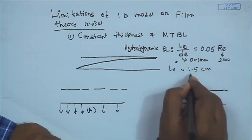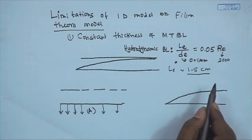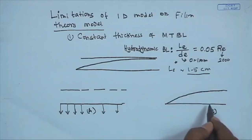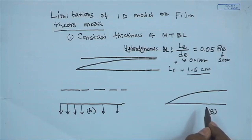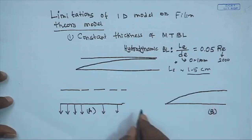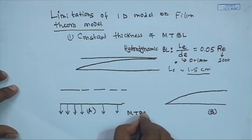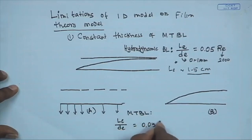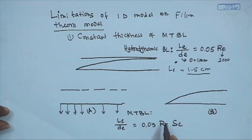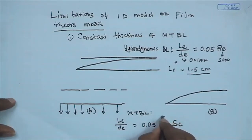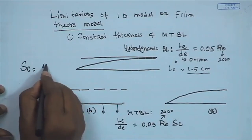Now let us look at the entrance length for the mass transfer boundary layer. For mass transfer, the entrance length is: L_e / d_e = 0.05 × Re × Sc. With Re = 2000 and d_e on the order of 1 mm, we need to estimate the Schmidt number. Schmidt number Sc = μ / (ρ × D). For membrane filtration, we select solutes with sizes larger than the membrane pore size, so they are rejected by physical separation.